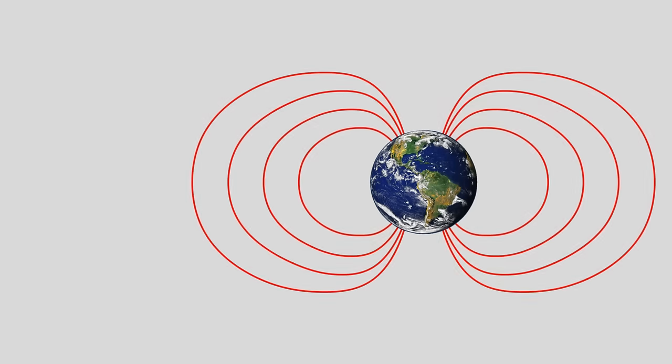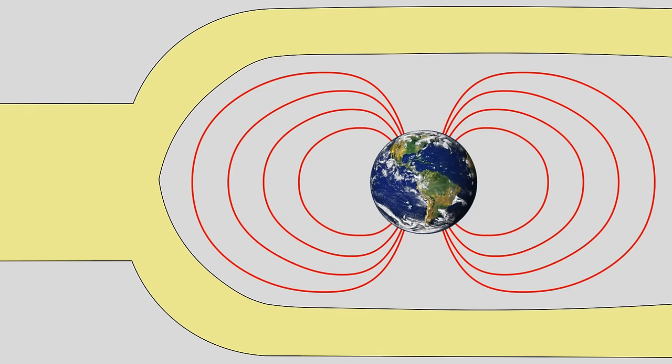Well, Earth is basically a gigantic magnet. Its magnetic field is shaped like this, and it serves an extremely useful function. It shields us from the solar wind, causing it to bend away from our planet.